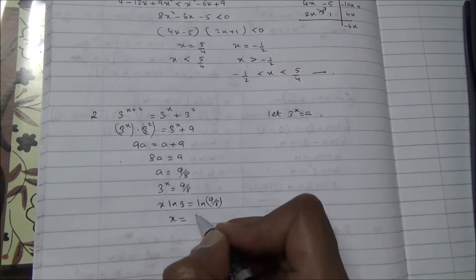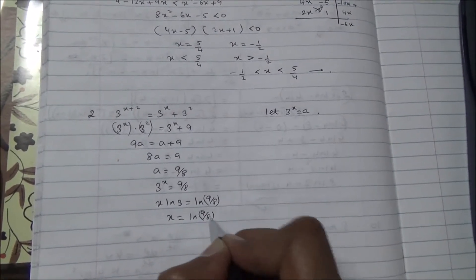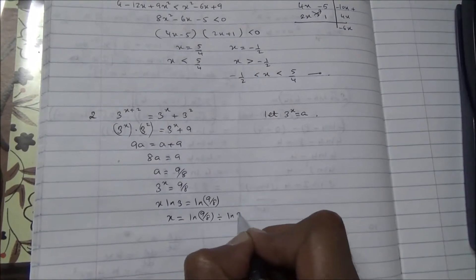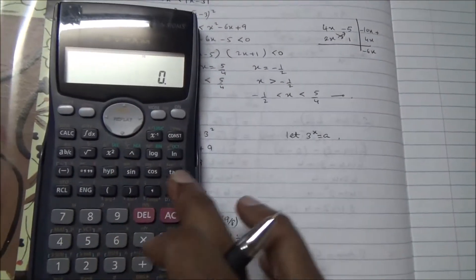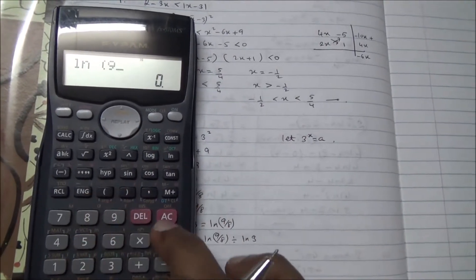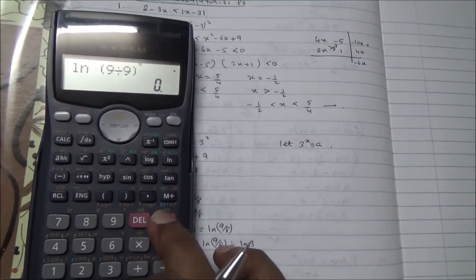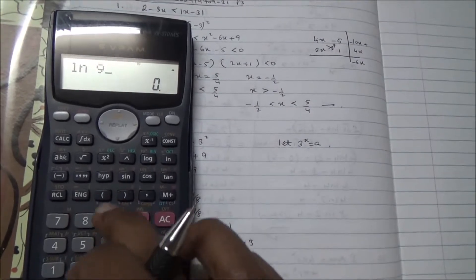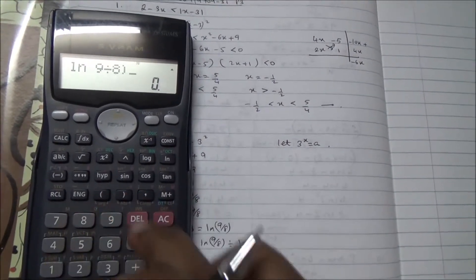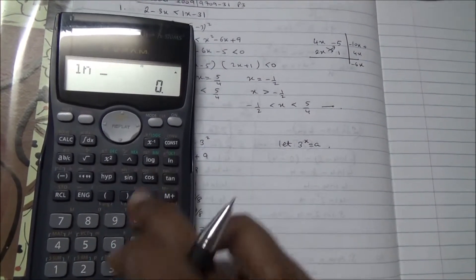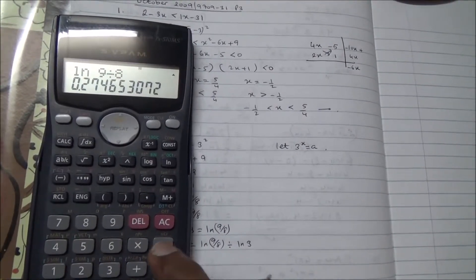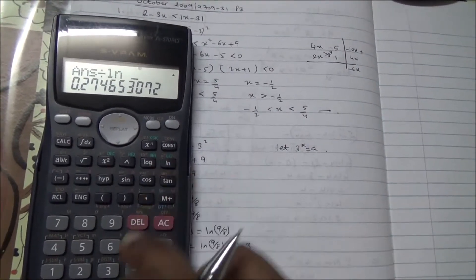Therefore, x is going to be ln 9 over 8 divided by ln 3. So, let's do this now in our calculator. ln 9 over 8... Sorry, ln 9 divided by 8.